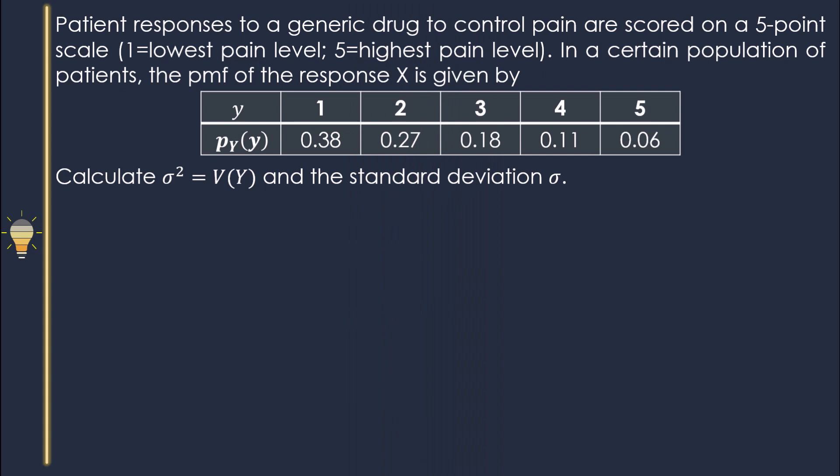In this example, a discrete probability mass function is given, meaning we know the y values and the corresponding probabilities. We're asked to find the variance of Y and the standard deviation of Y. Here I am going to explain how to find the variance of Y by using the definition.